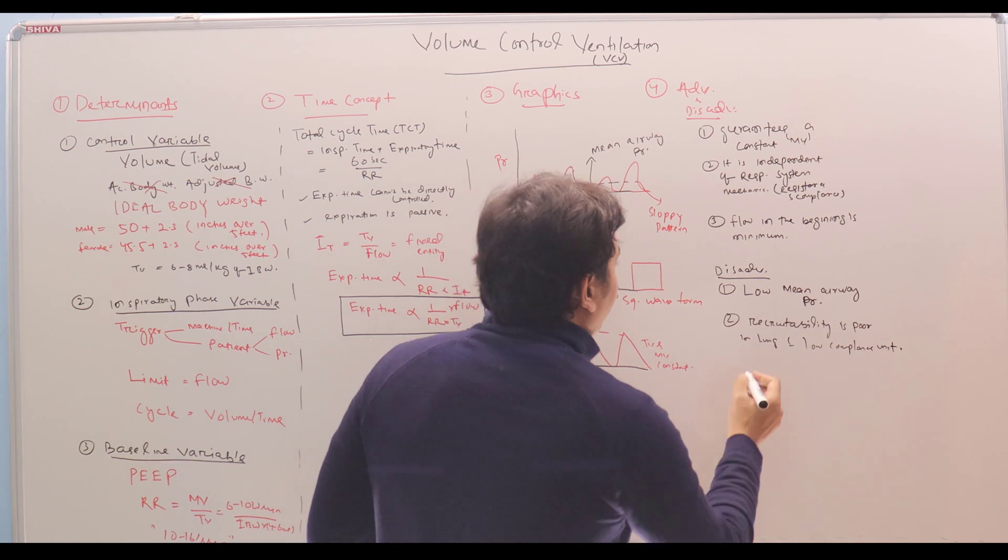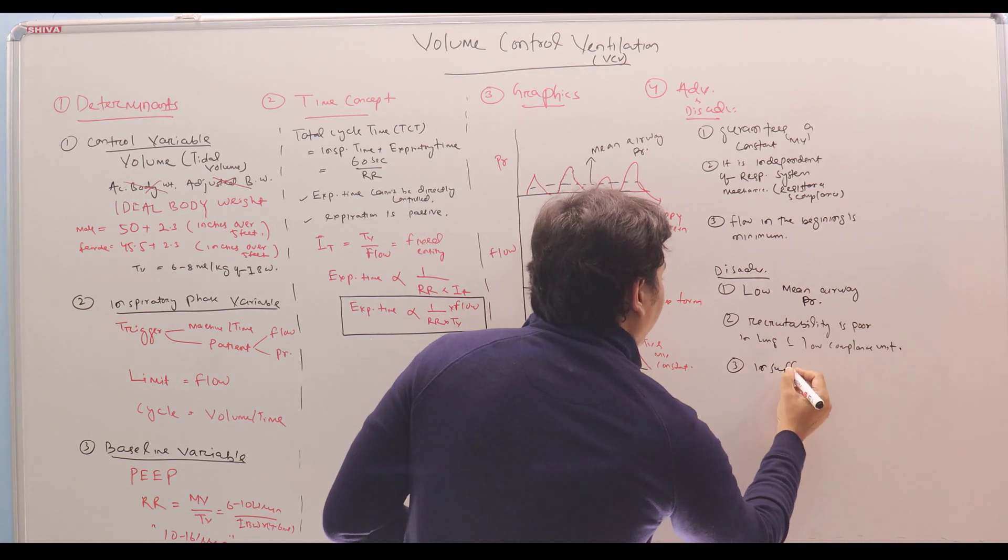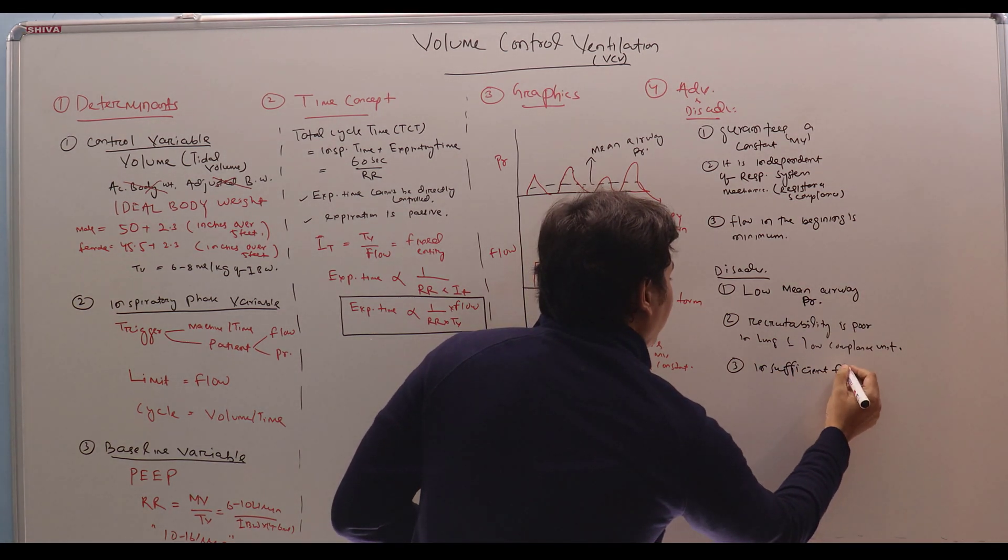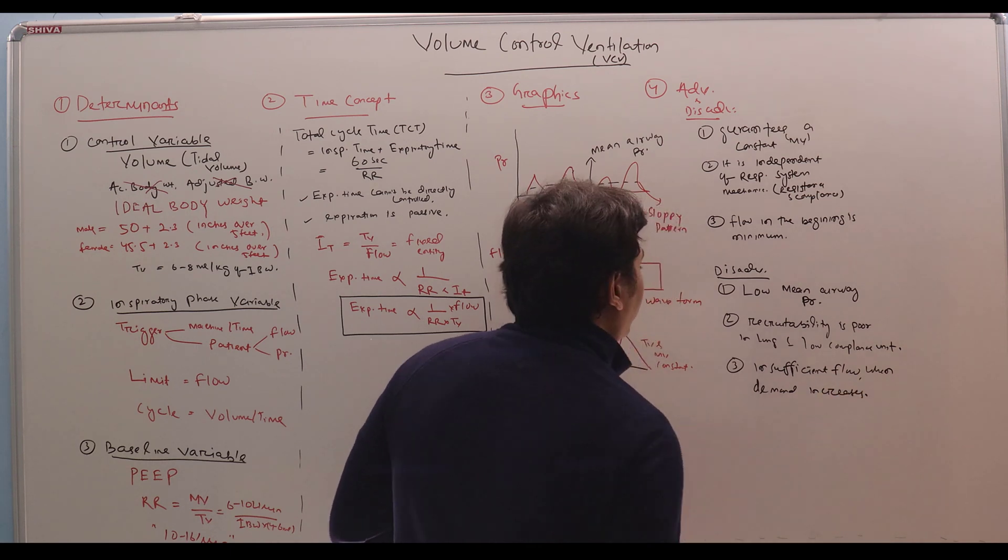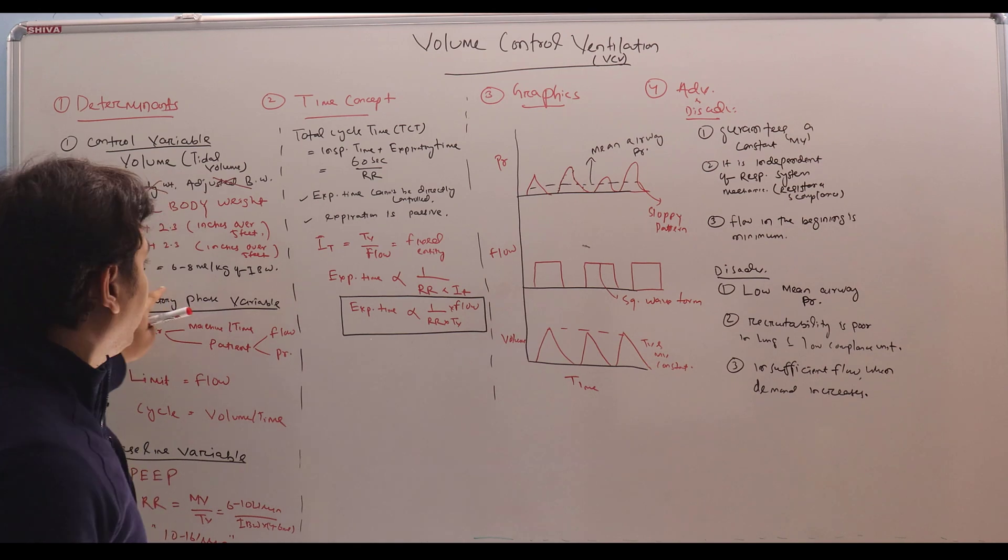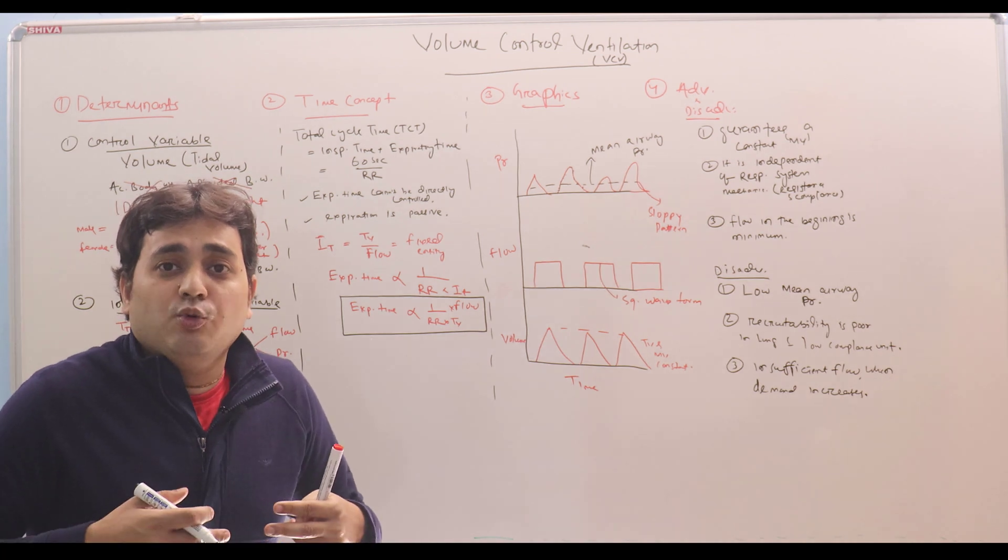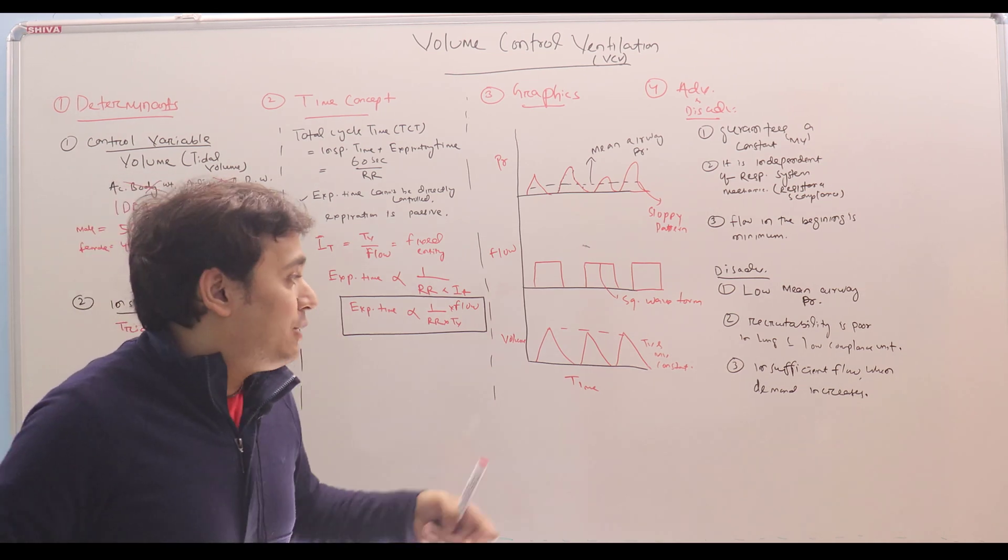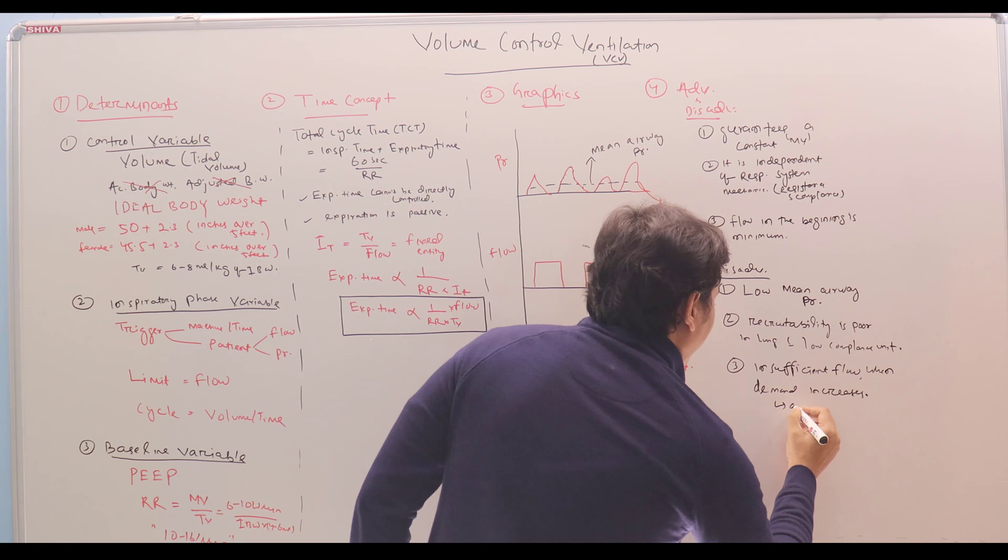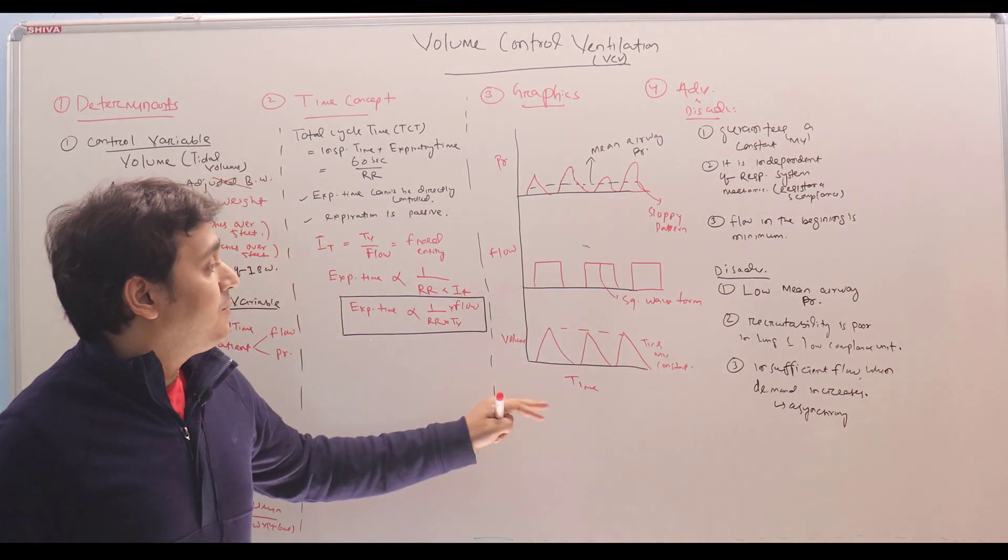Third one is insufficient flow when demand increases. Because you have set the flow, you have limited the flow, when the demand increases, for example, person is having sepsis or fever or person wakes up from sedation, at that time, demands become high. But because you have limited the flow, patient cannot take it and it will produce asynchrony. These are the major disadvantages of volume control ventilation.